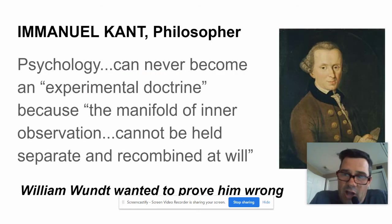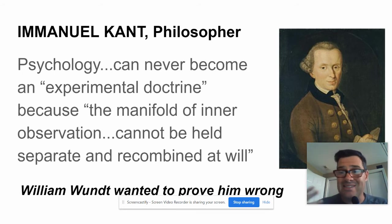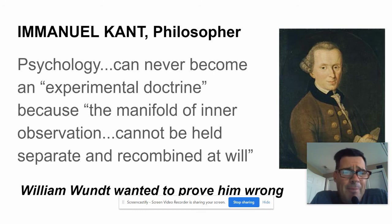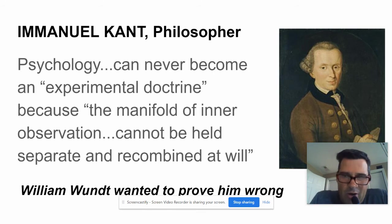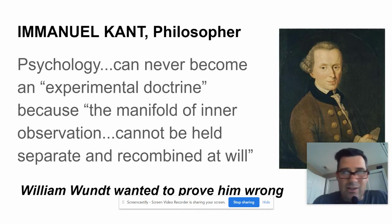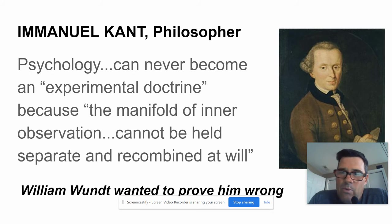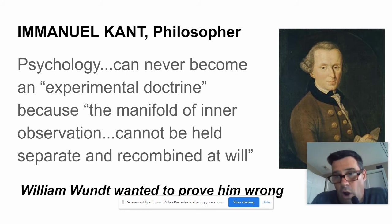Immanuel Kant, the philosopher of the 18th century, said psychology can never become an experimental doctrine — meaning a science — because 'the manifold of inner observation cannot be held separate and recombined at will.' The manifold of inner observation means what's going on in our brain, the things we're thinking and doing and why we act the way we act. We can't see it, we can't prove it, so therefore it can never be a science. Wilhelm Wundt's goal was to prove him wrong.